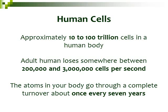For some fun facts: in one human body, we have approximately 10 to 100 trillion cells, though it's really just a rough estimate. Every second, as an adult human, you lose between 200,000 to 3 million cells per second — a lot of that is skin cells, so cells have to constantly be replacing themselves. And atoms in your body go through complete turnover about once every seven years, so all of your carbon and hydrogen atoms are brand new over that period, coming from the food you eat.